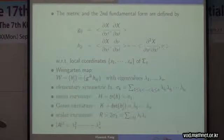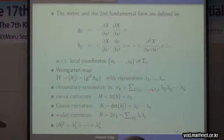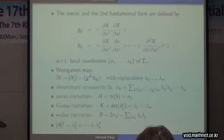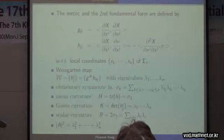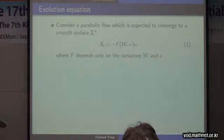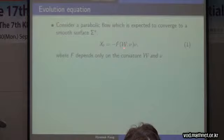Examples: mean curvature is sigma_1, essentially the trace of the Weingarten map, taking k equals 1. When k equals n, you have only one possibility — taking the full product of all eigenvalues — which is Gauss curvature. Scalar curvature is sigma_2: you take two eigenvalues out of n with i and j different and take their product. The general form of this parabolic flow in the extrinsic sense is dx/dt equals f times nu, where the speed f depends on the Weingarten map and the normal to the hypersurface.